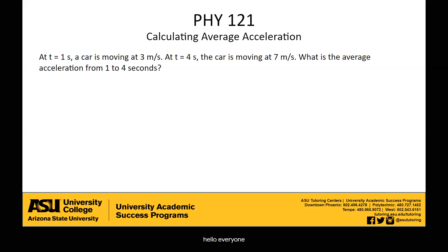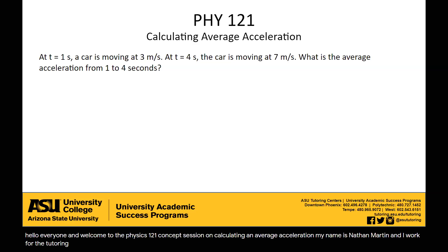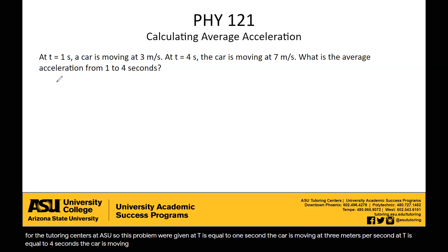Hello everyone, and welcome to the Physics 121 concept session on calculating an average acceleration. My name is Nathan Martin and I work for the tutoring centers at ASU. In this problem, we're given that at t equals one second, the car is moving at three meters per second. At t equals four seconds, the car is moving at seven meters per second. What is the average acceleration from one to four seconds?